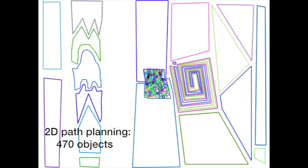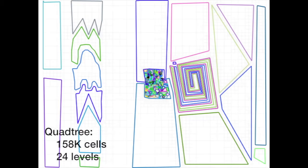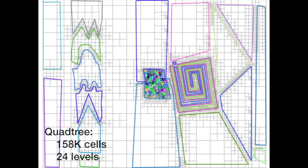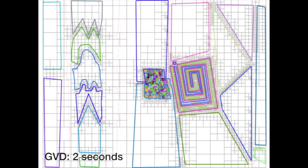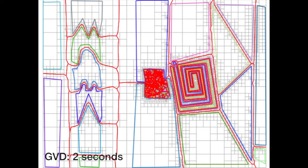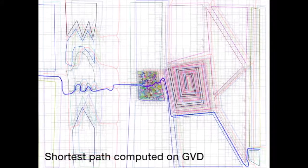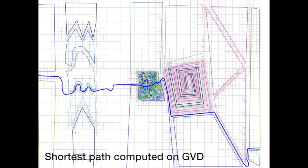Path planning is a popular application of the generalized Voronoi diagram. In this example, we demonstrate our algorithm's ability to find paths through vastly different scales of object spacings. The minimum path is shown in blue.